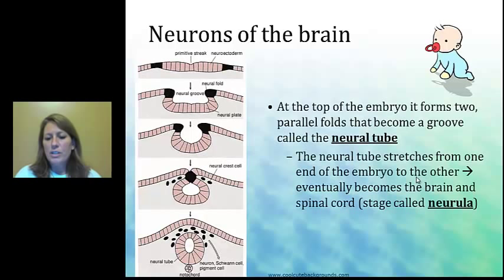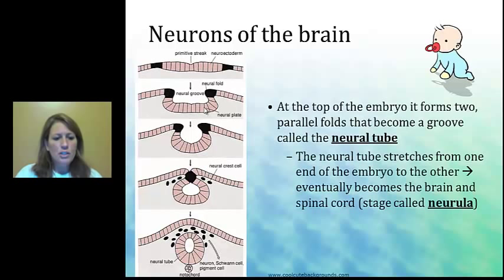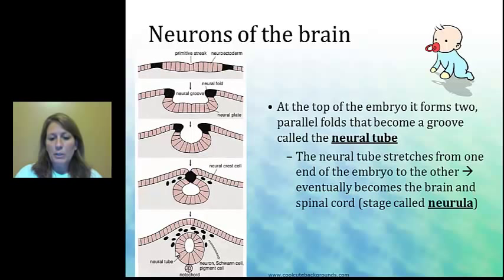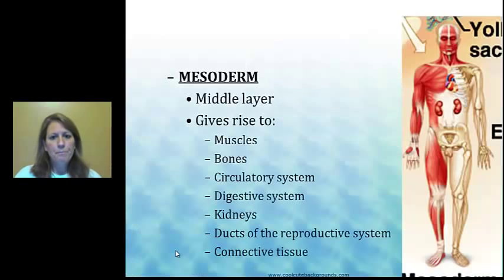Neurons are part of this ectoderm layer — it's actually like a sublayer. The stage is called neurula, and it's very specialized, focusing on the nervous system. Looking at the diagram, the layer concaves and eventually becomes the spinal cord. When it pinches together, the neural tube forms, and that will eventually develop into the spinal cord. This is still part of the ectoderm.